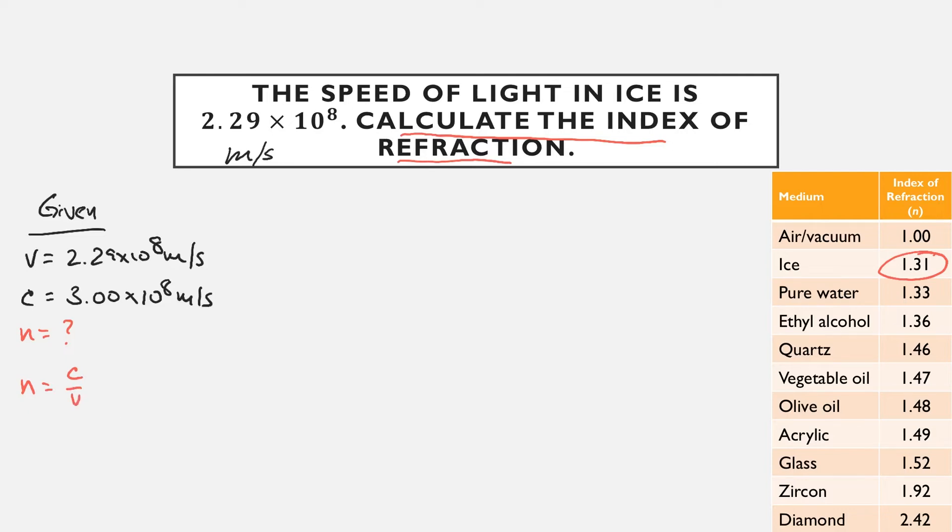So now let's go ahead and do a little bit of math. We're going to rewrite our equation over here and we're going to plug in everything we know. So 3.00 times 10 to the 8 divided by 2.29 times 10 to the 8. If you plug that into your calculator, it's going to be 1.31. And that matches up exactly with our known value for the index of refraction of ice.